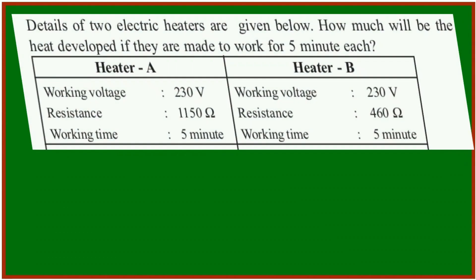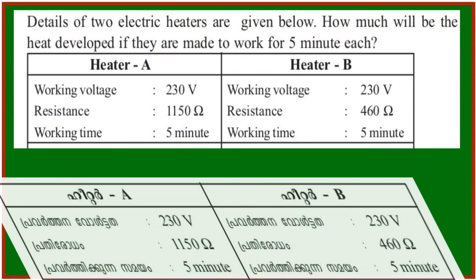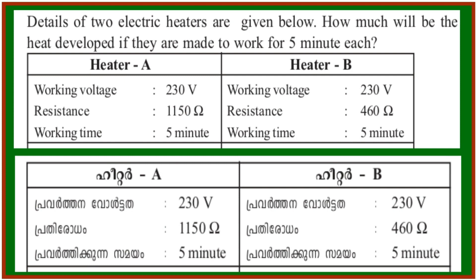Fourth question: details of two electric heaters are given below. How much will be the heat developed if they are made to work for 5 minutes each? Heater A: working voltage 230V, resistance 1150 Ohm, time 5 minutes. Heater B: working voltage 230V, resistance 460 Ohm, time 5 minutes.